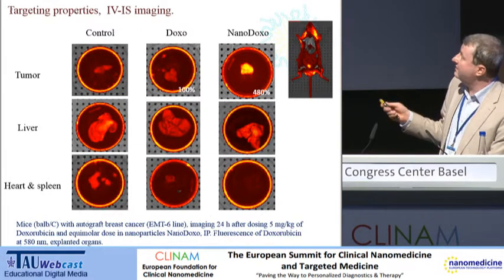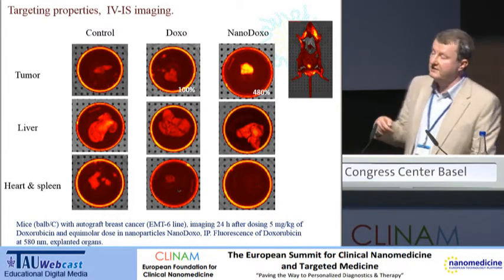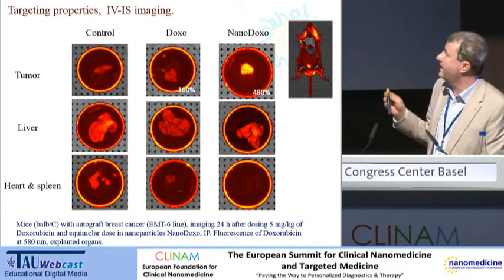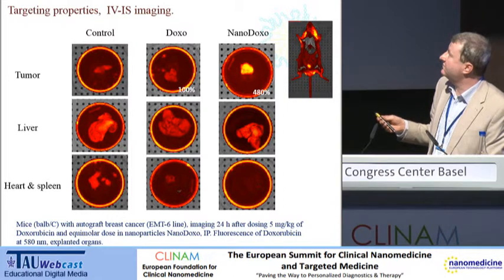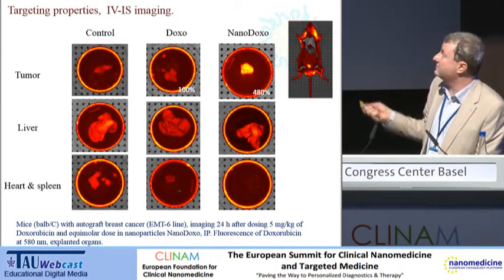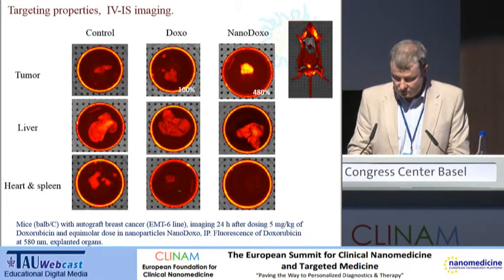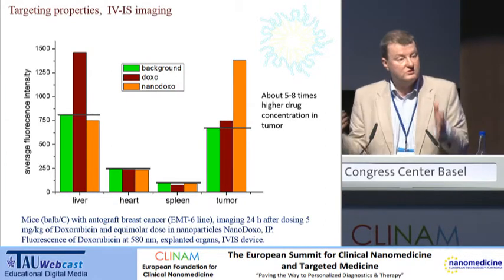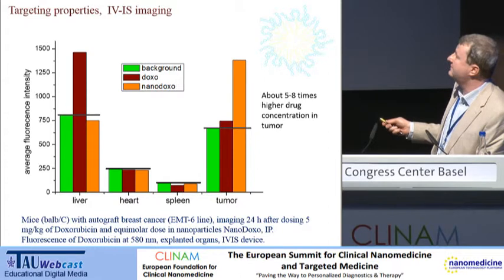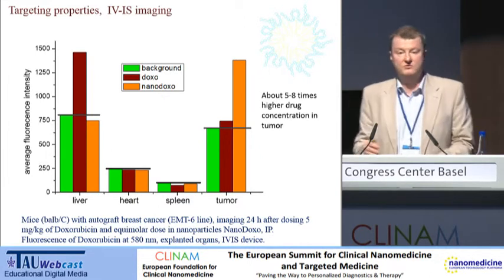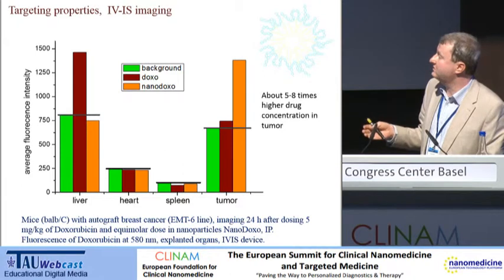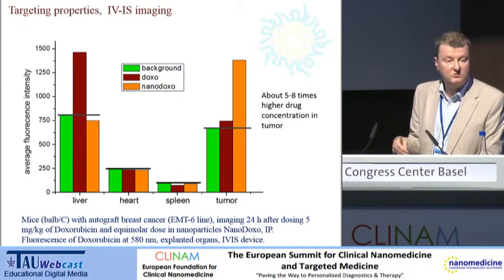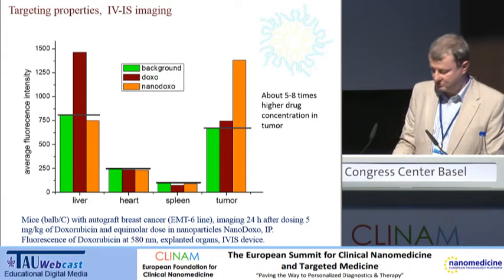Then we moved to animal trials. We inject doxorubicin and an equimolar dose of nanoparticles with doxorubicin. What we notice is a very high fluorescence of the tumor area as compared to pure doxorubicin. The highest concentration of pure doxorubicin is actually in the liver. But if you inject doxorubicin inside nanoparticles, the fluorescence of the tumor is much, much higher — we observe something like 5 to 8 times higher fluorescence of the tumor in equimolar administration of doxorubicin inside nanoparticles as compared to pure doxorubicin.